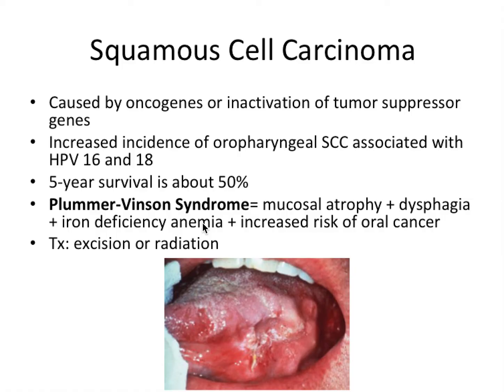Plummer-Vincent syndrome involves mucosal atrophy like an atrophic tongue, dysphagia which is difficulty swallowing, and iron deficiency anemia, along with an increased risk of oral cancer like squamous cell carcinoma. The treatment for SCC is either surgical excision or radiation therapy.